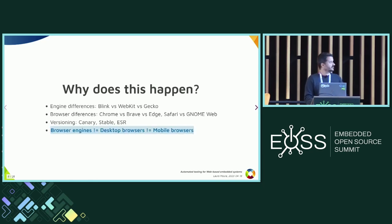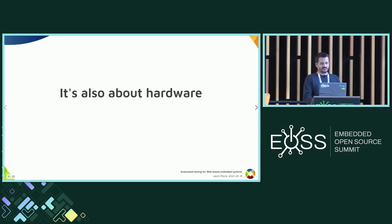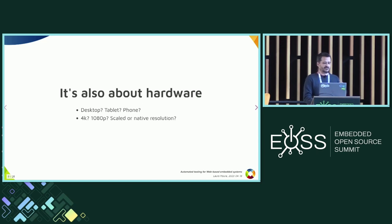There's a great talk linked from last year's Selenium conference by David Burns that discusses how these differences appear between browser engines across desktop, mobile, and embedded platforms. It's also about hardware: is the web application running on a desktop-like machine, a tablet, a phone? What's the screen size — 4K or Full HD? Are we using scaled or native resolution? And what kind of interaction will the web app have — just a display, mouse, or gestures?